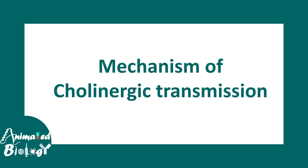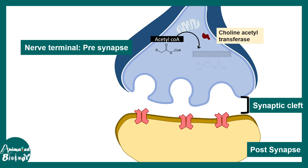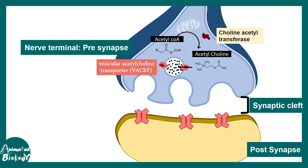Let's talk about the mechanism of cholinergic neurotransmission. In the presynapse, acetyl-CoA gets converted with the help of choline acetyltransferase into acetylcholine — choline acetyltransferase is the key enzyme for this conversion. Acetylcholine is then loaded onto vesicles with the help of vesicular acetylcholine transporters. When an action potential reaches the presynaptic terminal, vesicle fusion happens and acetylcholine gets released into the synapse.